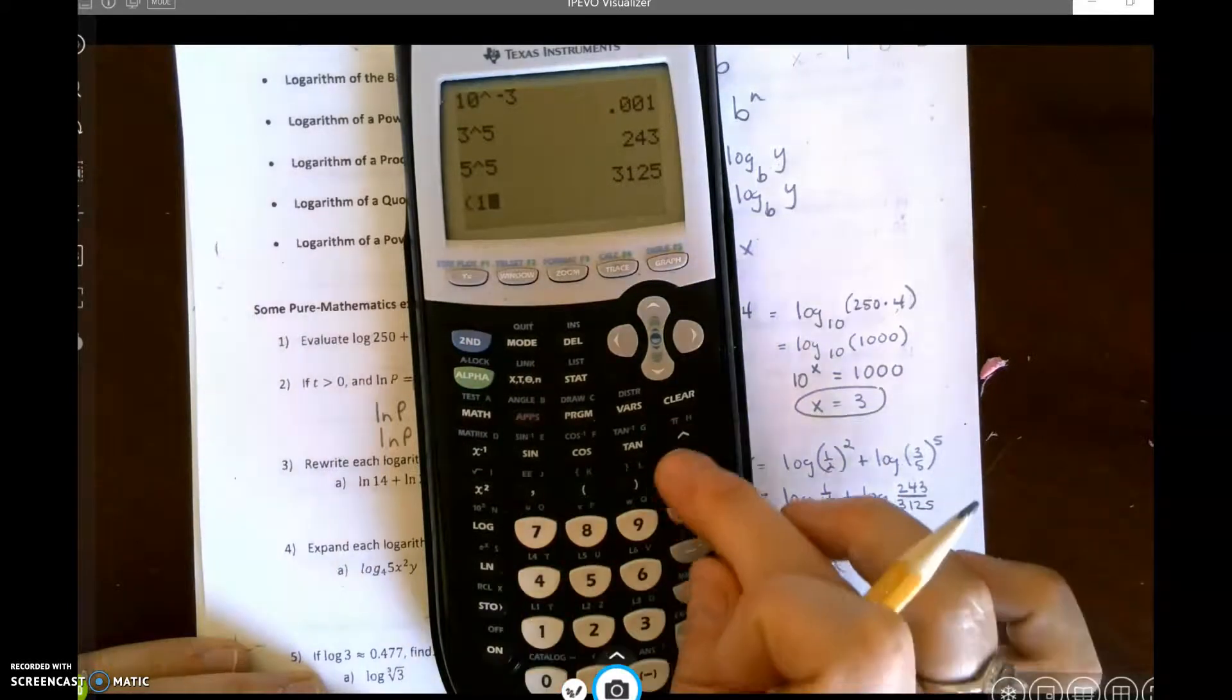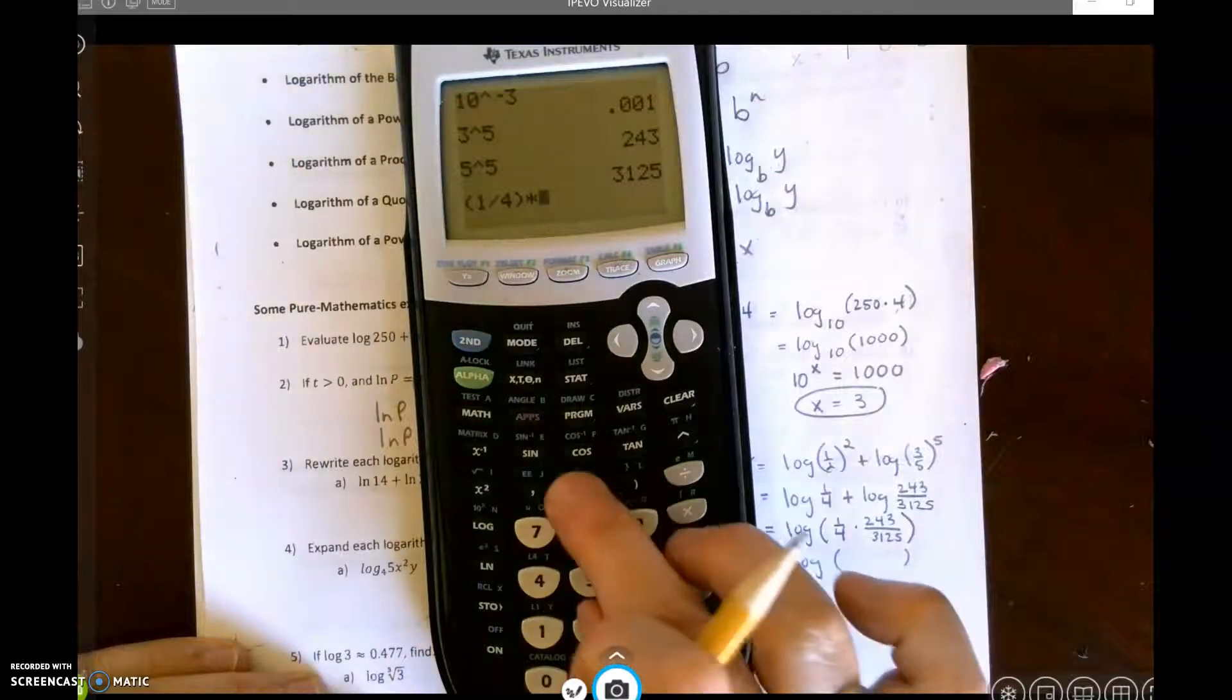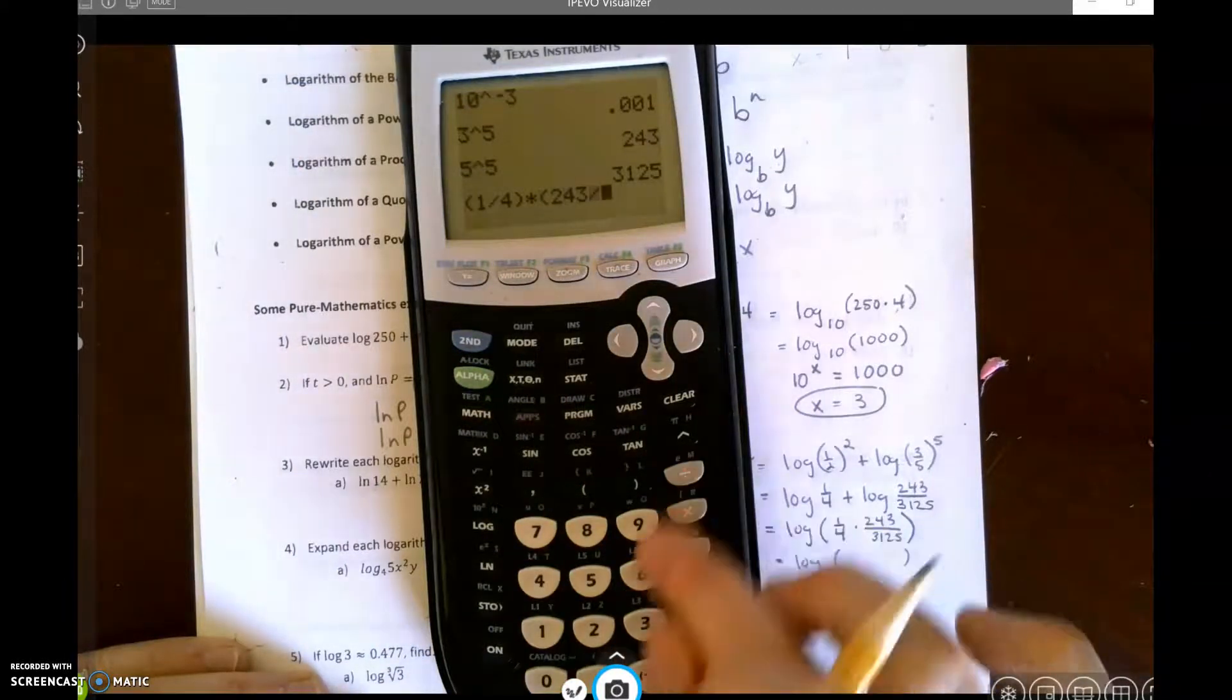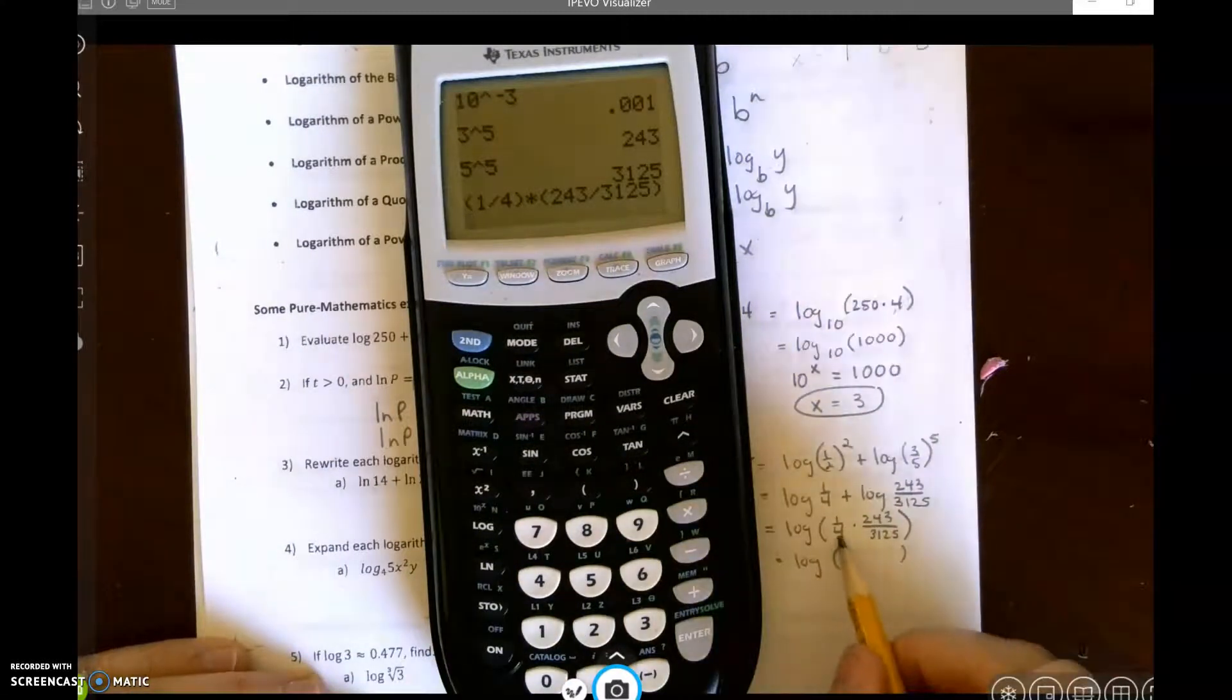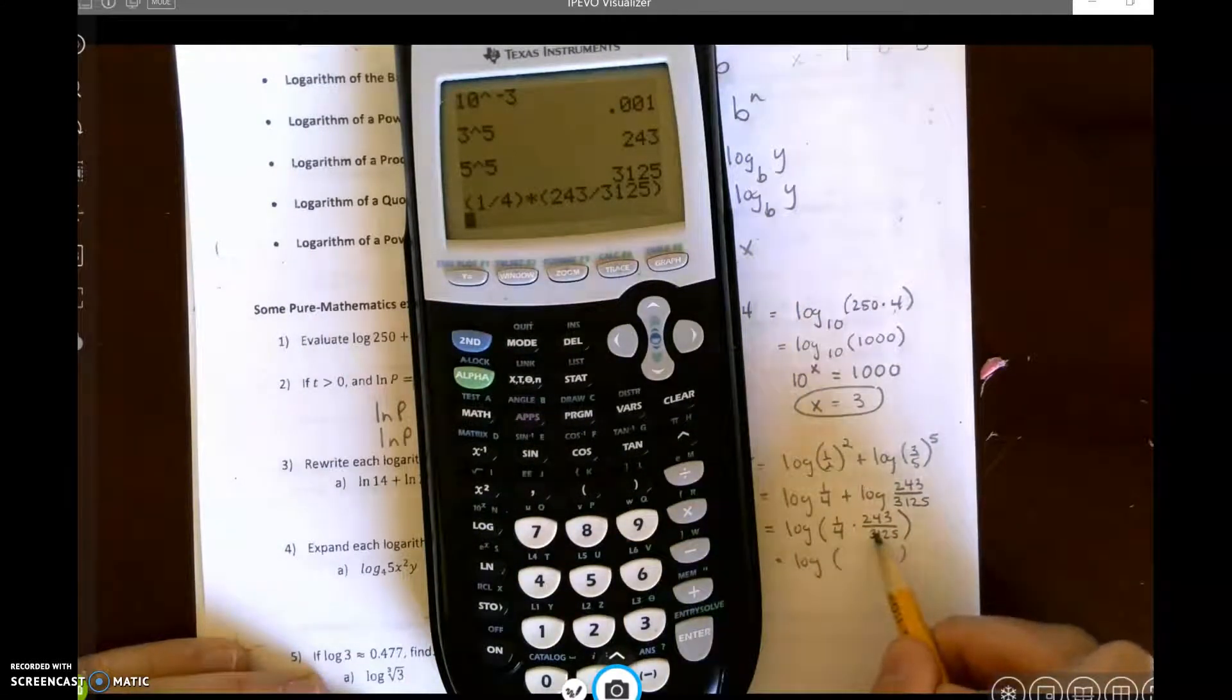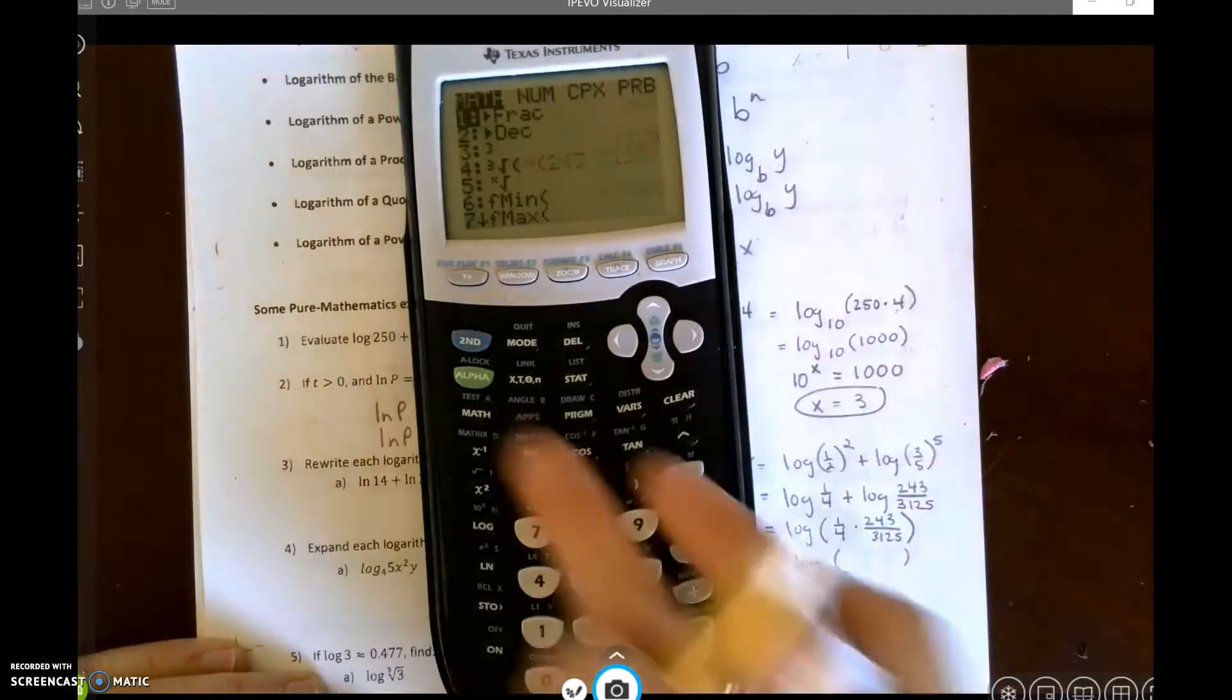One-fourth times 243 divided by 3,125. So I'm multiplying this fraction times this fraction. And I'm going to do math, enter, enter.